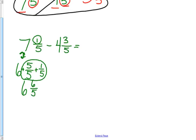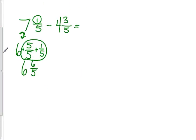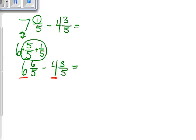Now I can do the rest of my subtraction: 6 and 6 fifths minus 4 and 3 fifths. I underline my whole numbers — 6 minus 4 gives me 2. I circle my denominators, which stay the same: fifths. And 6 minus 3 — I'm excited because I have a larger number here because we renamed. 6 minus 3 is 3. The answer is 2 and 3 fifths.